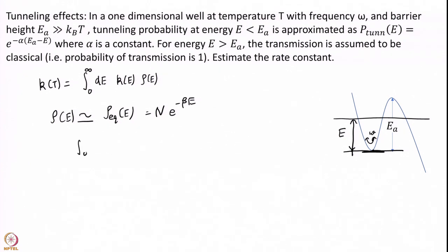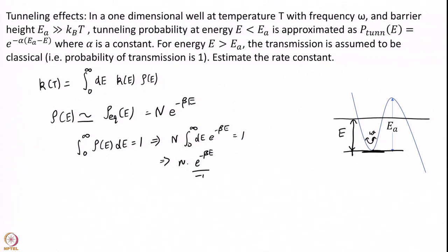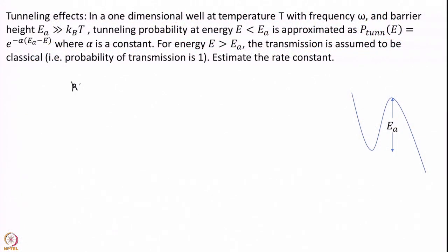We find the normalization N from the integral from 0 to infinity, and this should equal 1 — so this is easy to integrate. Now the second part: how do I calculate K(E)? We split it into E less than Ea and E greater than Ea and calculate them separately.